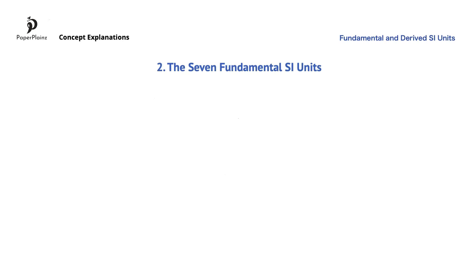There are seven fundamental SI units. These are the meter, the kilogram, the second, the ampere, the kelvin, the mole and the candela. Only the first six are part of the IB physics syllabus.